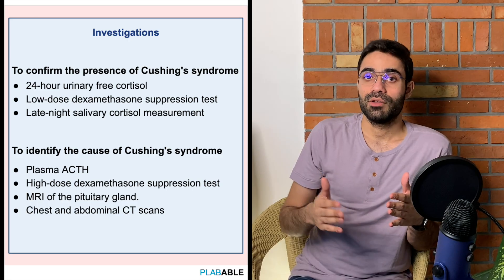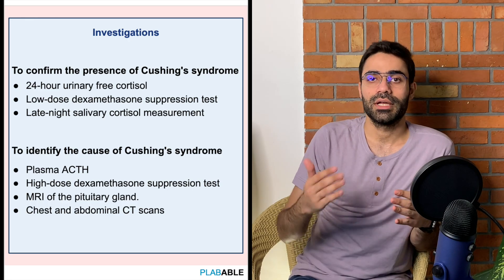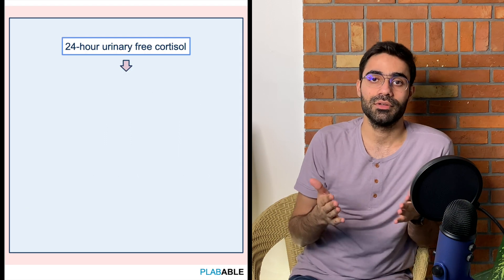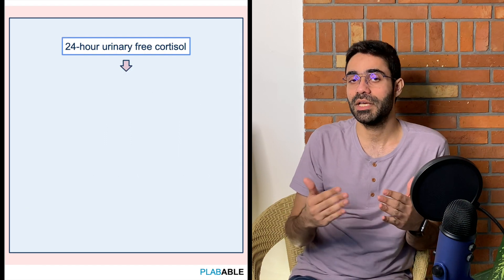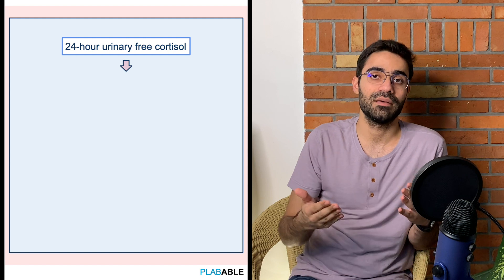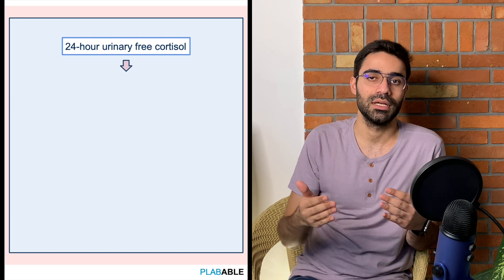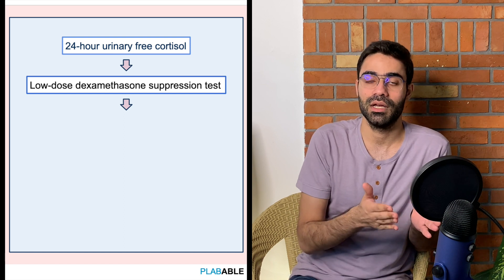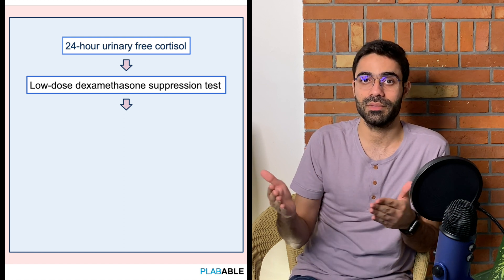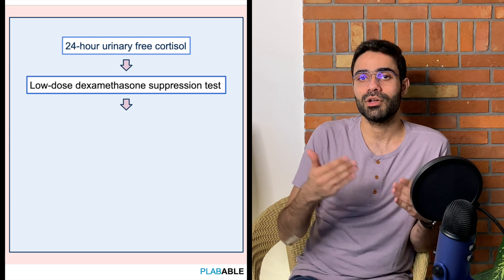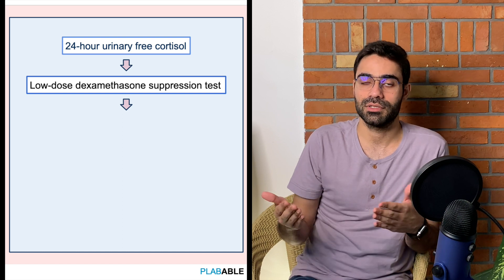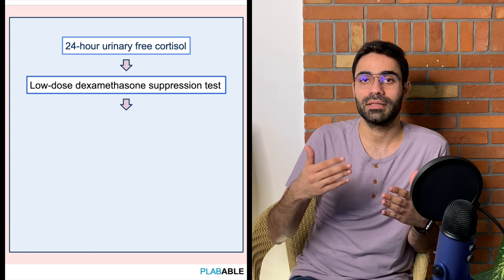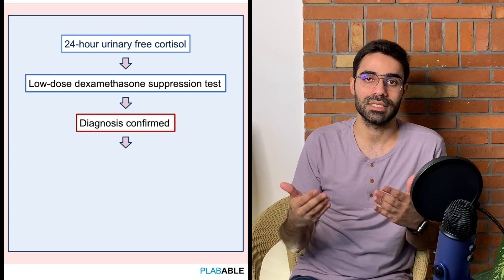If you are suspecting Cushing's, you can do any of three following tests: the 24-hour urinary cortisol, or if the patient is unable to provide that sample, the low dose dexamethasone suppression test (one milligram), or late night salivary cortisol. If any of these tests come positive, it helps make the diagnosis of Cushing's syndrome.